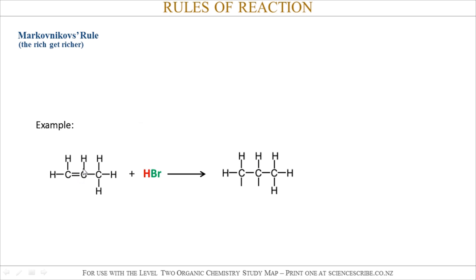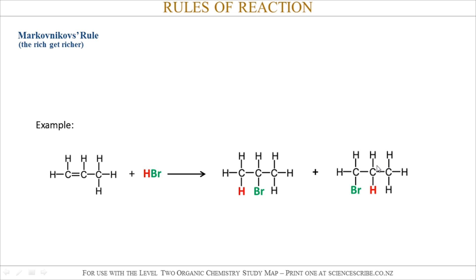Our definition of an addition reaction is that a double bond breaks to become a single bond and two new single bonds are formed. My first possibility of a product is that I have my hydrogen and bromine attached like so, but I could also get this second possibility here. I make both of these products, but it's not a 50-50 split — one of them actually appears in excess. The one which appears in excess is called the major product, and Markovnikov's rule is just a way of predicting which of these two possibilities will be forming in excess.